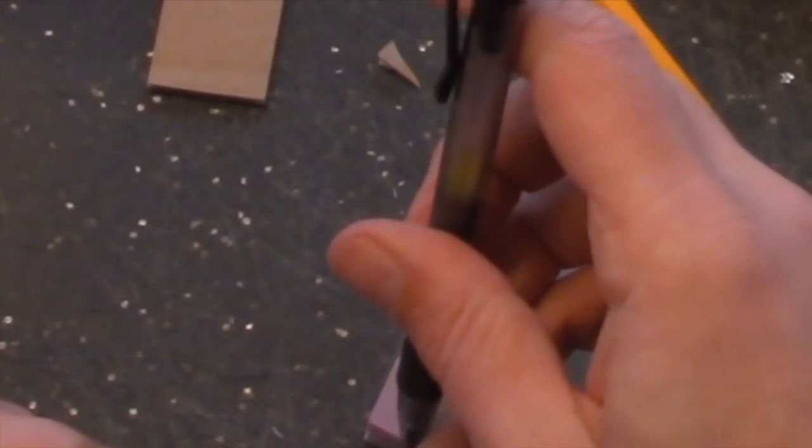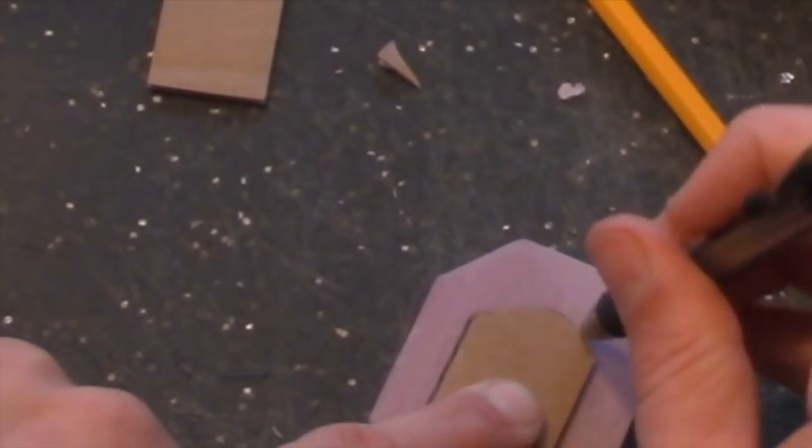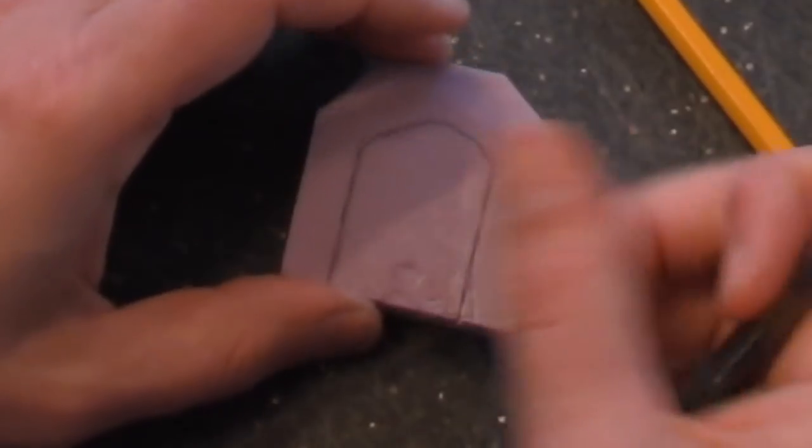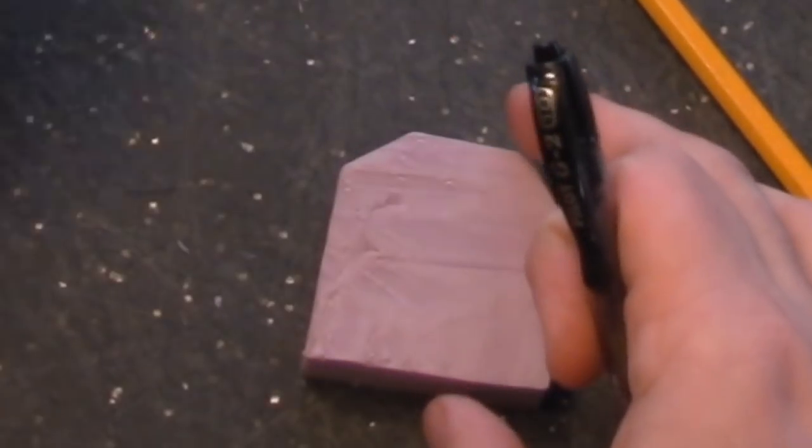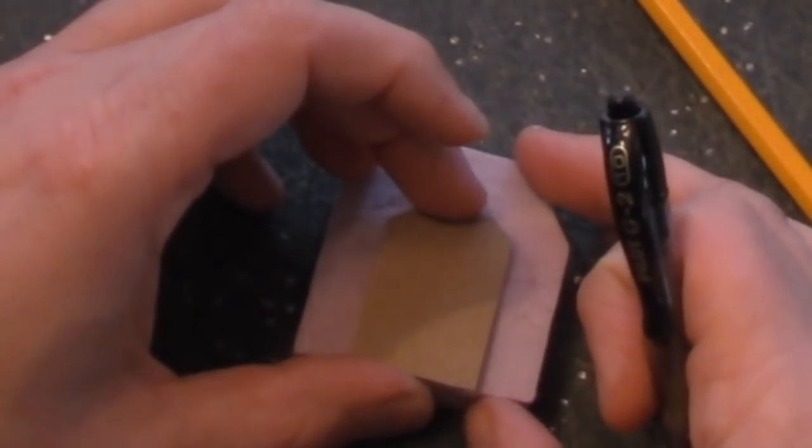I place the template in the center of the foam and trace out the arch. In this case, I'm doing the tracing with a wide tip gel roller pen. I find these are really great for carving stuff into the styrofoam.